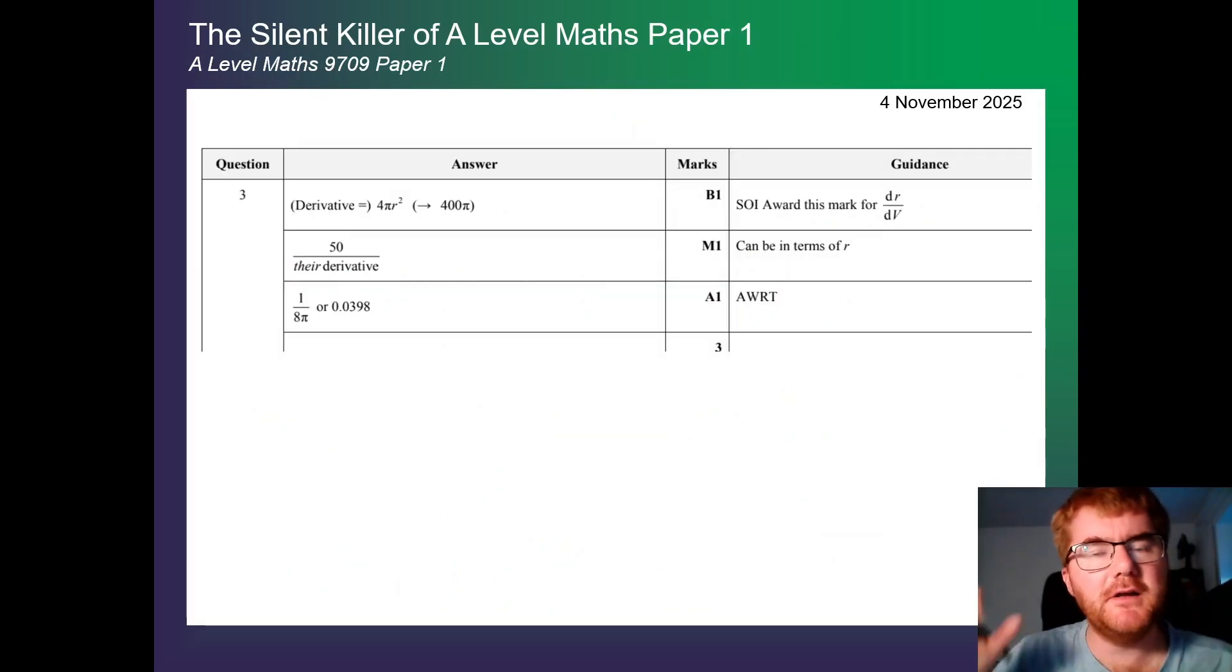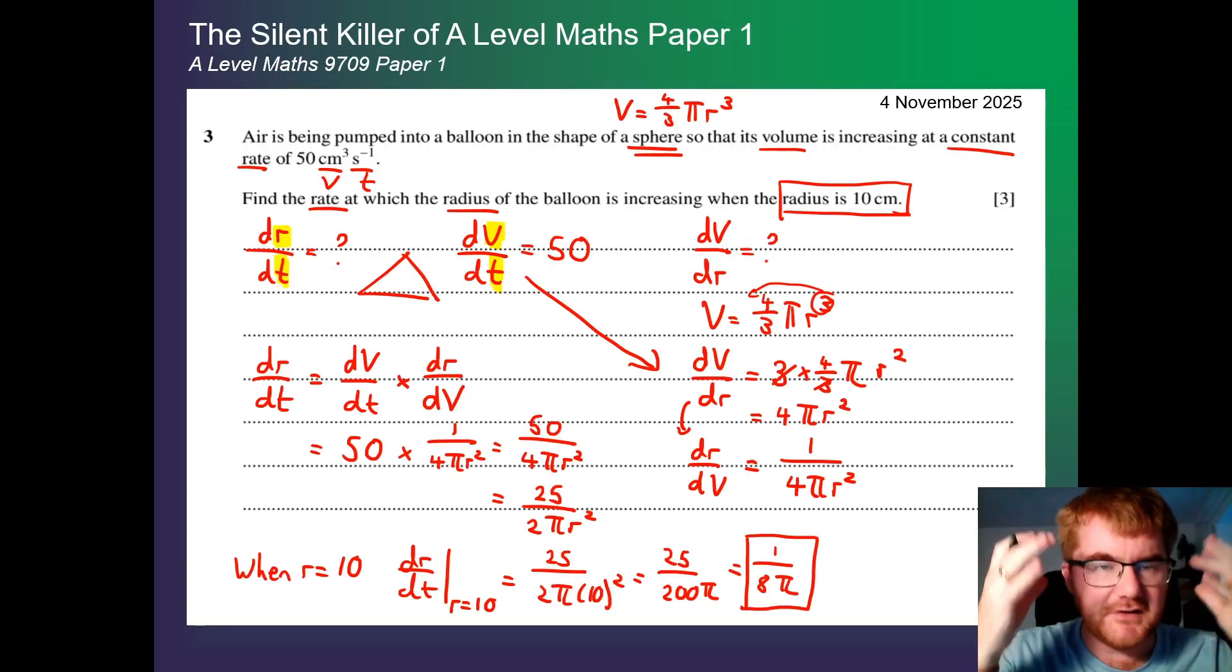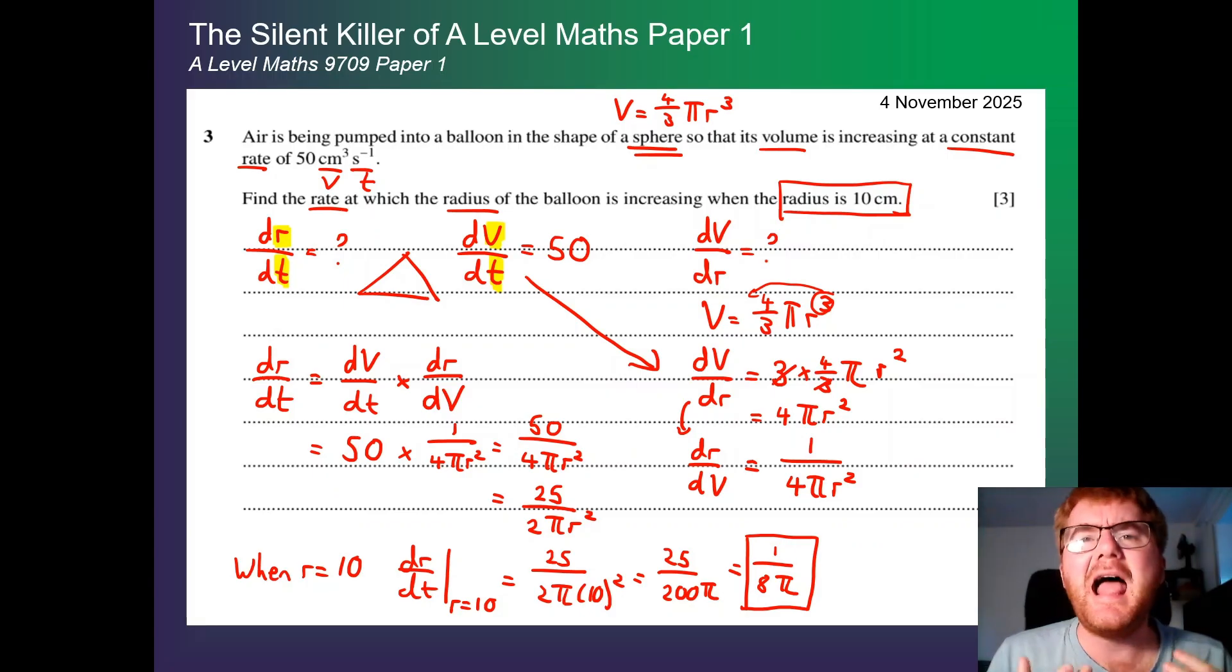Now, you can have a look at the mark scheme. But one of the problems with this topic and why it's not really covered that well, why it's a silent killer as I mentioned at the start of the video, is because you look at this and go, okay, derivative, that's nice, 50 over derivative, and then an answer without really explaining those steps that I've gone through here and the strategy behind it. And this is what A-level maths paper 1 students often struggle with, particularly at the start of A-level maths, is they get these questions where they don't really have a firm structure to work through and successively do these questions.